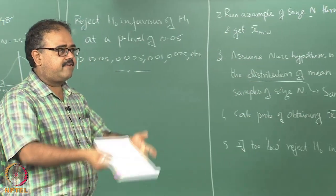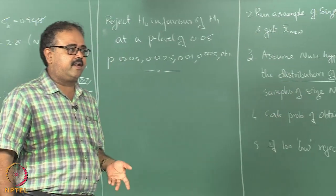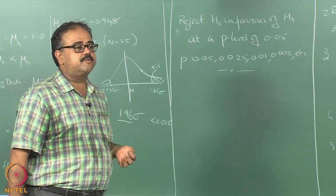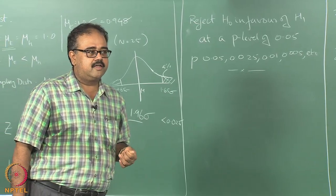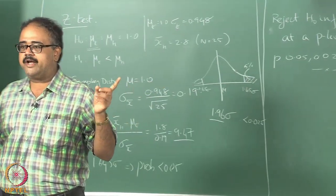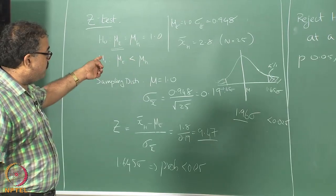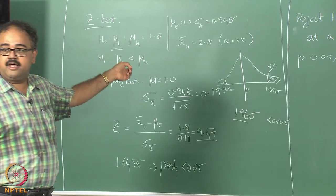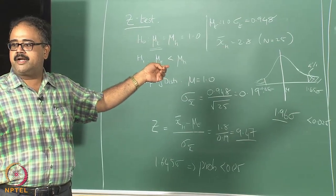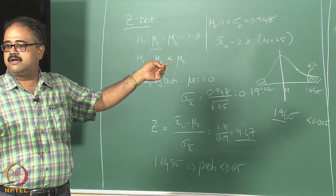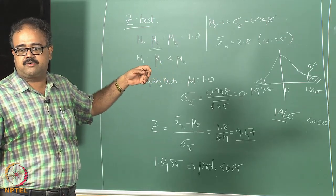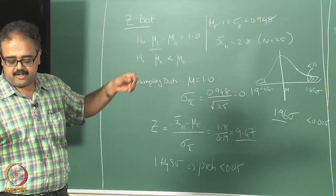But if you truly have a way of sampling from the underlying data, you can set up whatever sampling distribution you want. Someone's question was: why did I have only one X-bar new? Why cannot I sample X-bar new on multiple samples and just compute this on multiple samples and figure it out?